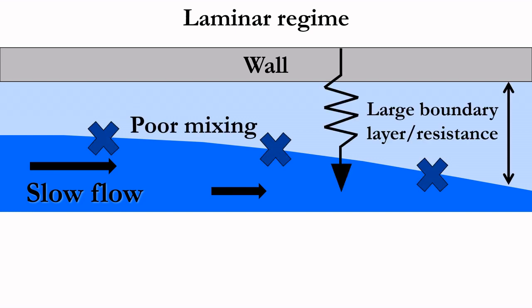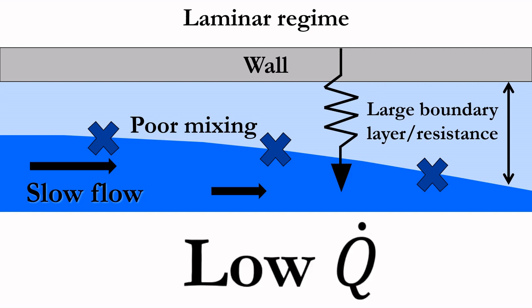resulting in a large boundary layer of stagnant fluid where heat transfer is difficult. This can lower the heat transfer coefficient through the exchanger, resulting in a lower heat duty and a less efficient exchanger.